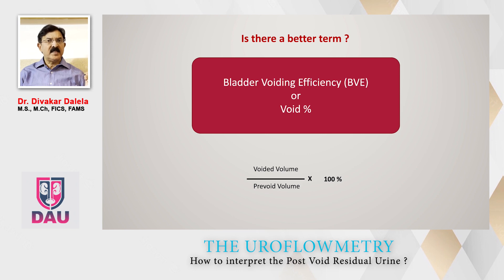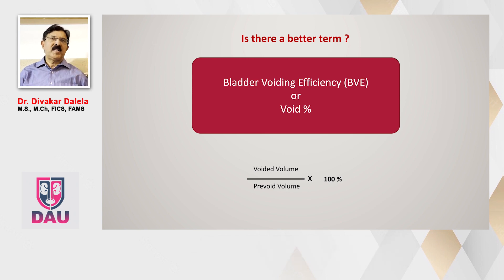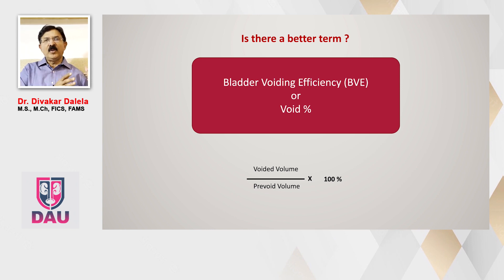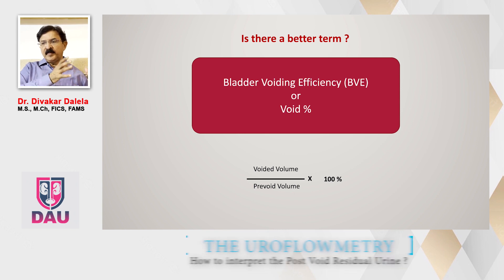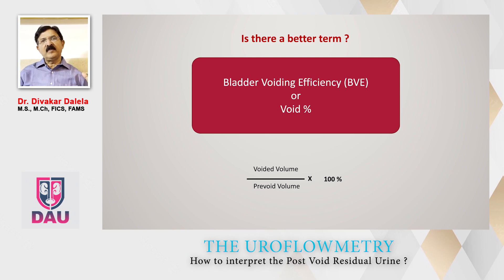We nowadays have better terms to express the same thing. One term is called bladder voiding efficiency or void percentage. This also takes into account the initial bladder volume at the time of starting voiding, and it tells you that the post-void residual urinary volume is a reflection of at what volume the patient began voiding.